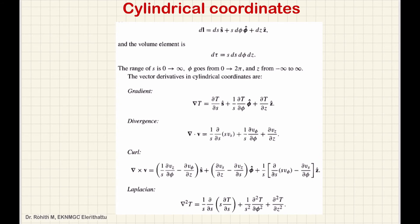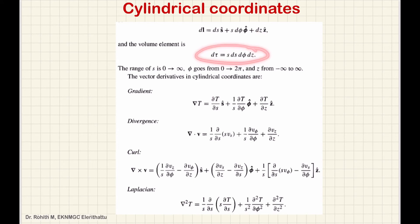This gives the total displacement vector and the volume element in cylindrical coordinates. The ranges are: s ranges from 0 to infinity, phi ranges from 0 to 2π, and z ranges from minus infinity to plus infinity.